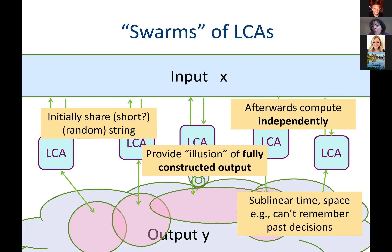The hope is we can do all this with sublinear time and space. That means we're not really able to remember our past decisions. If I said you can use this seat, my neighbor also has to know that seat got used — but I don't get to talk to them. So somehow we have to agree in advance on a procedure so that nobody actually has to remember anything, because we can't transmit information.